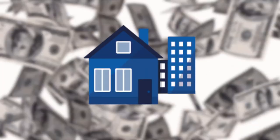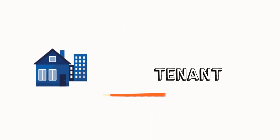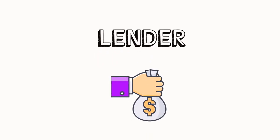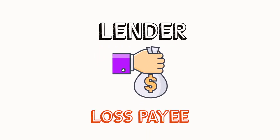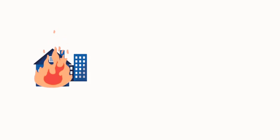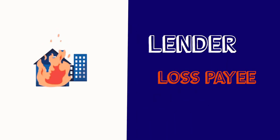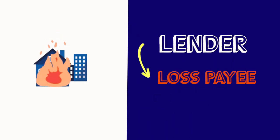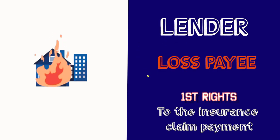An example of a loss payee is when a lender finances a commercial property and some business equipment. If a tenant is insuring the property or structure itself, the lender has a financial interest at stake and should be listed as a loss payee on the property policy. If the building burns down and the equipment is destroyed, and the lender is named as a loss payee, they will have first rights to the insurance claim payment before the insured tenant.